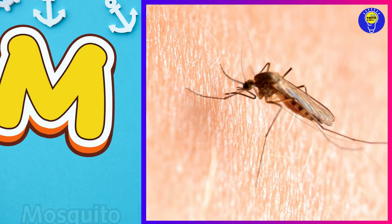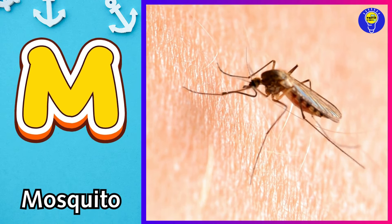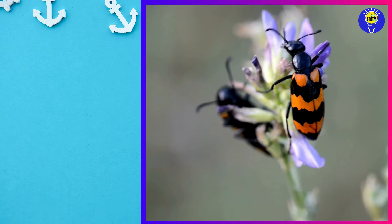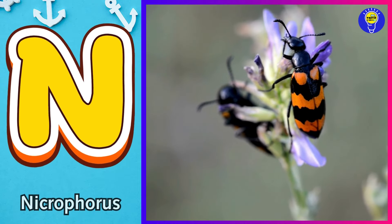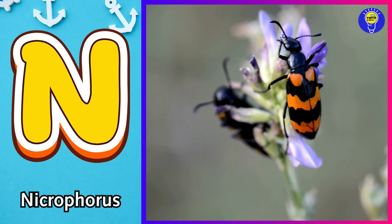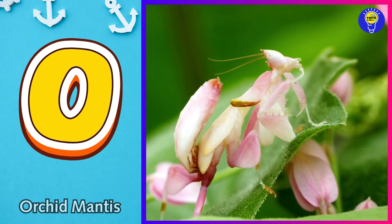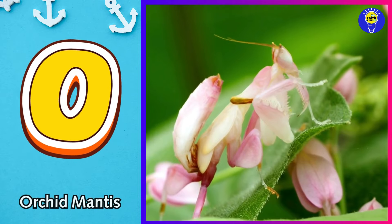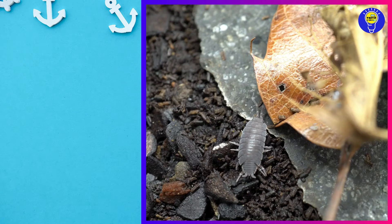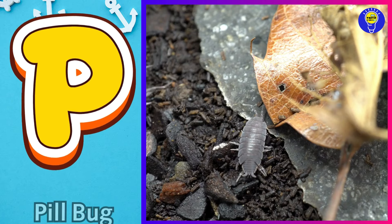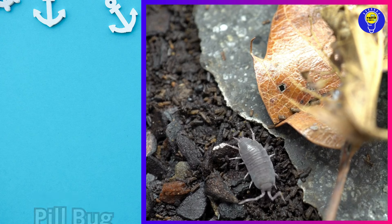M is for mosquito. ma, mosquito. N is for necrophores. ne, necrophores. O is for orchid mantis. o, orchid mantis. P is for pill bug. p, pill bug.